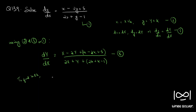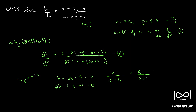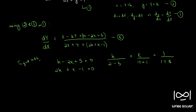To find h and k, we set h minus 2k plus 5 equal to 0 and 2h plus k minus 1 equal to 0. Solving using cross-multiplication, we get h equal to minus 3 by 5 and k equal to 11 by 5. Let this be equation 9.